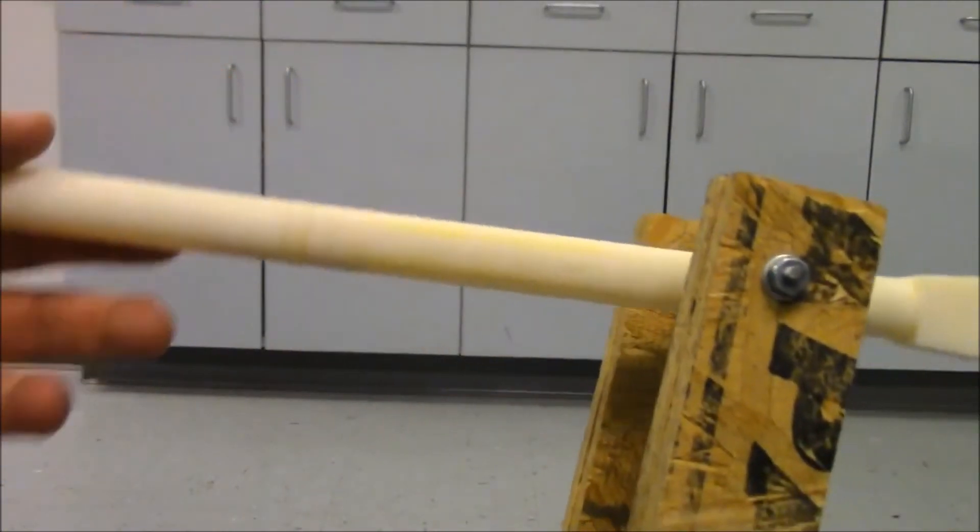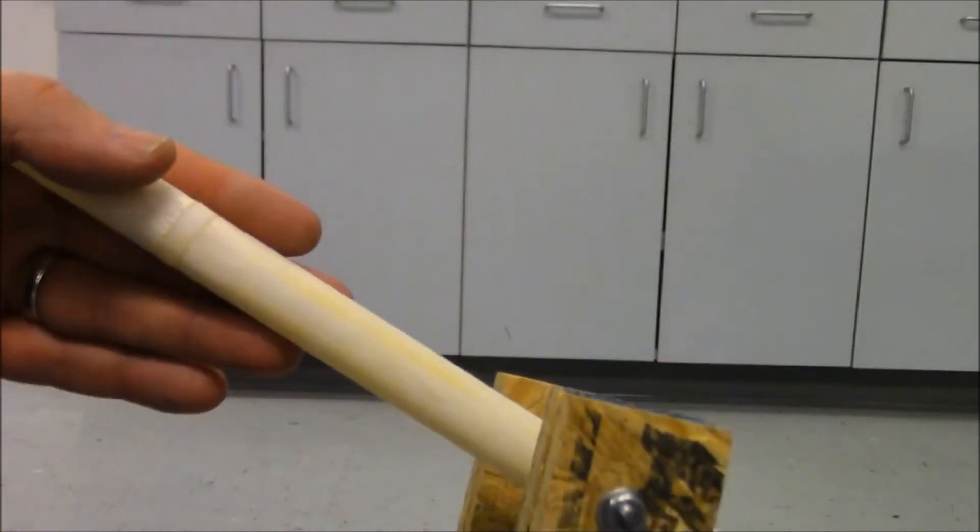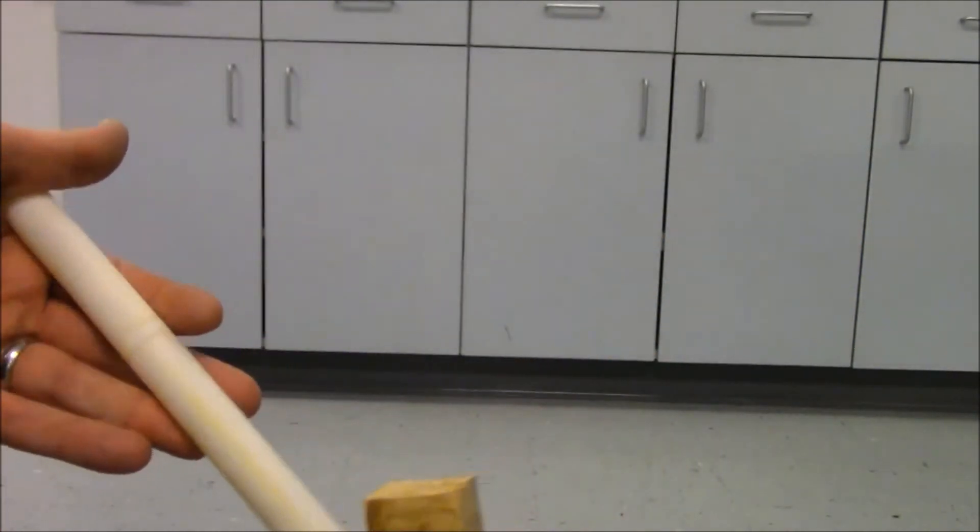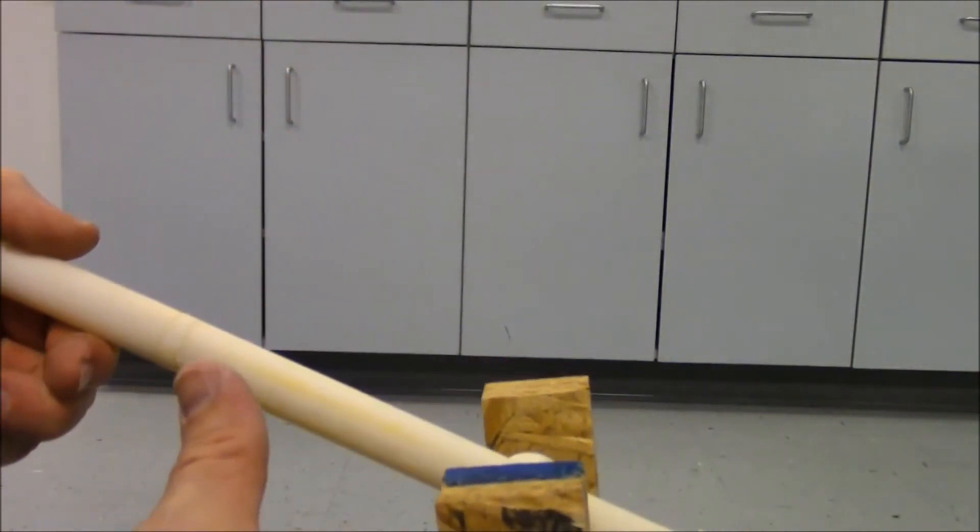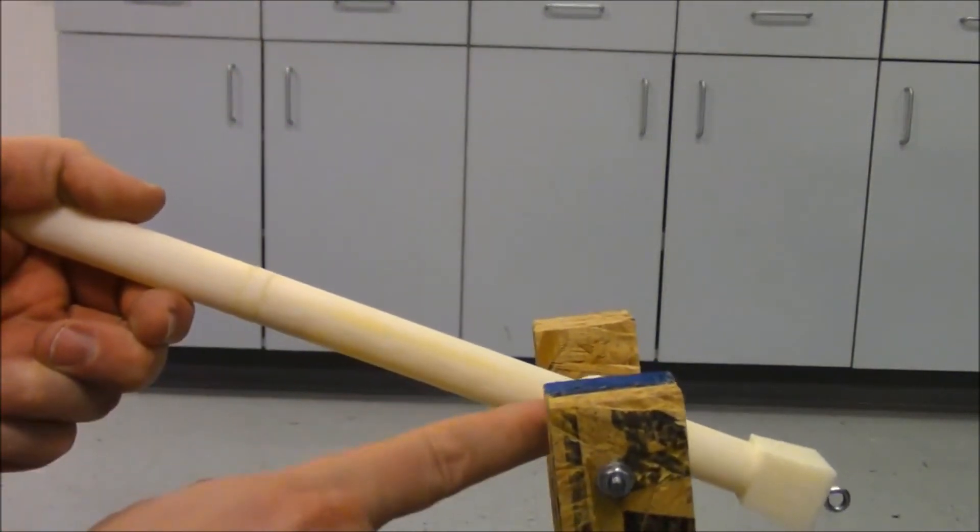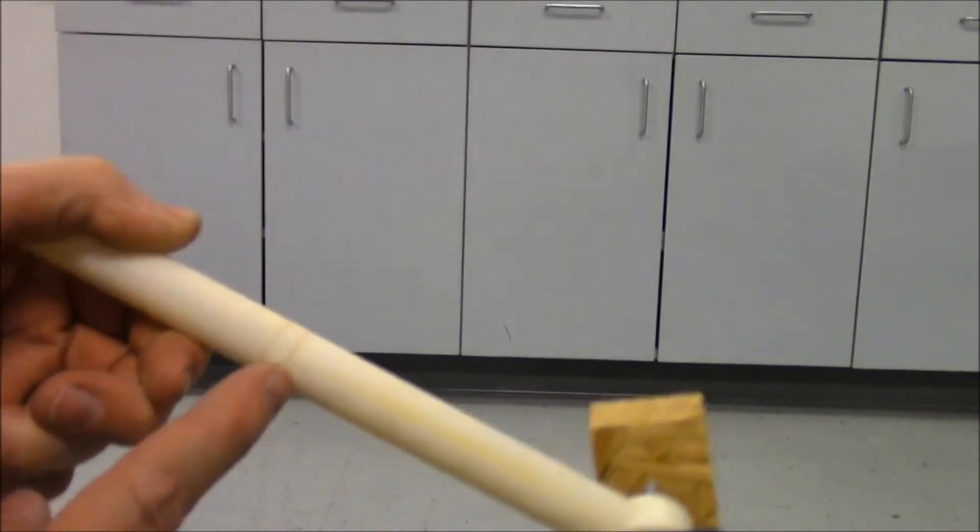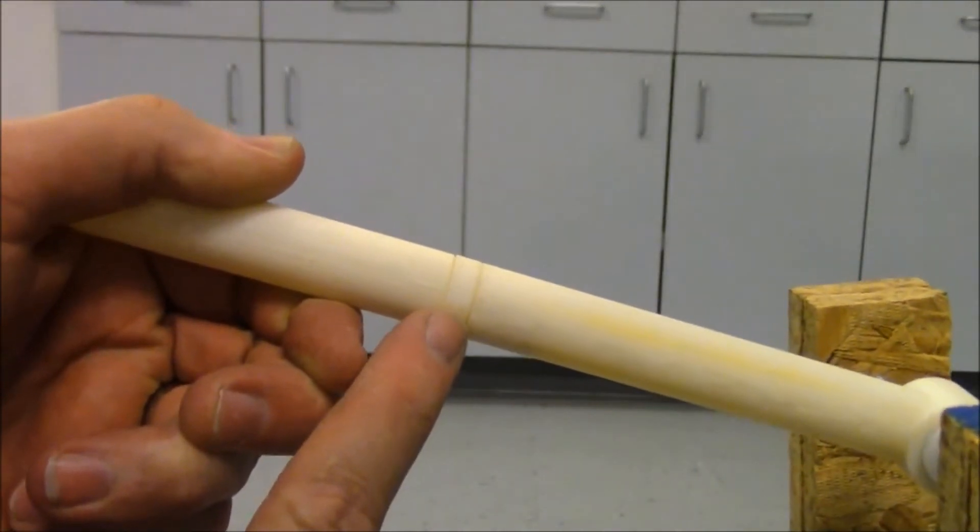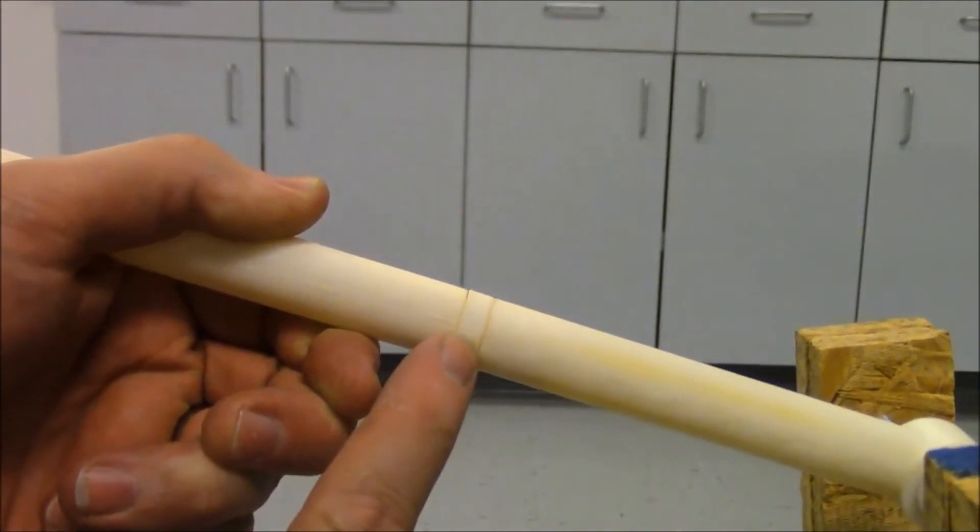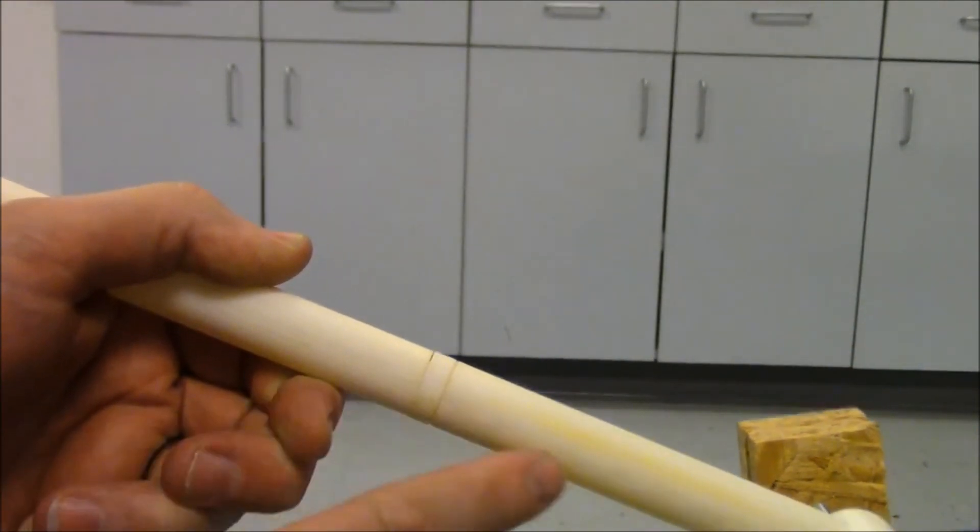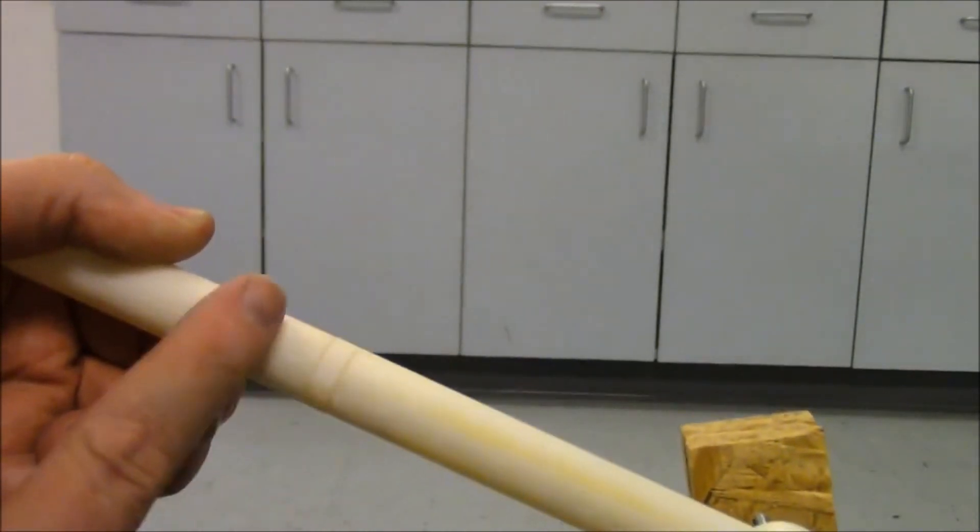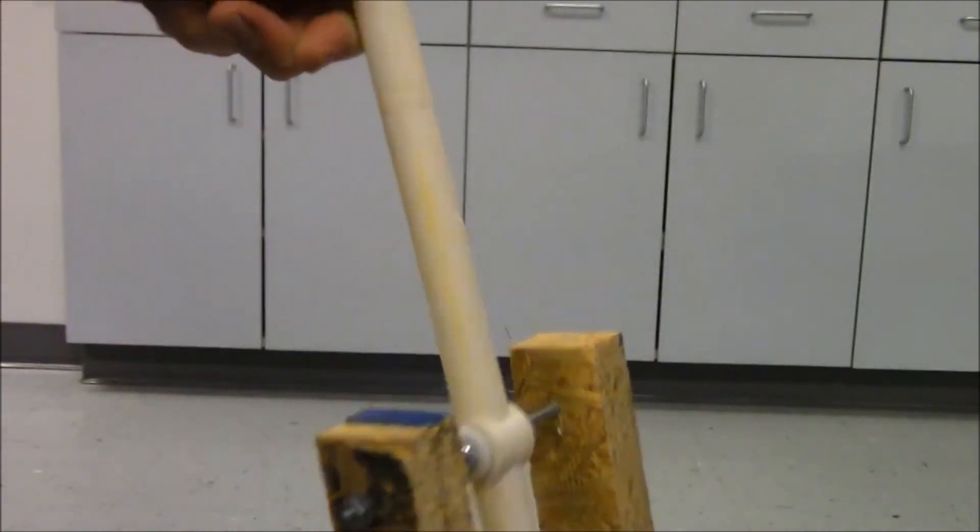Some schools don't have a 3D printer that can handle a 16 inch long piece. And so if that's the case, your teacher may have you design your trebuchet so that it has two halves. If you notice right here, there's a joint. So they had to print three separate pieces. This one, this one, and then a piece that goes inside and connects them. It's hollow inside so they could save on weight.